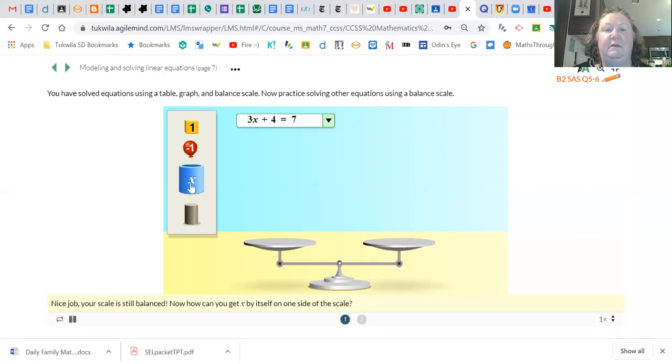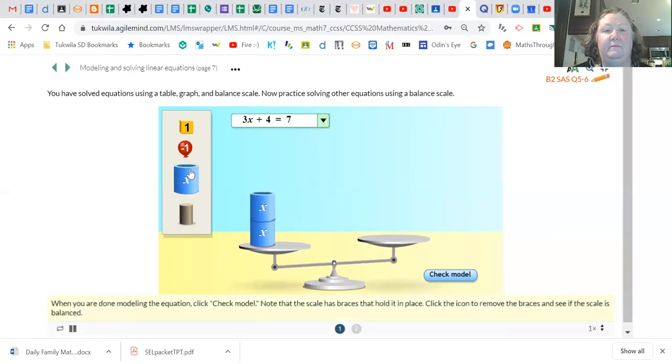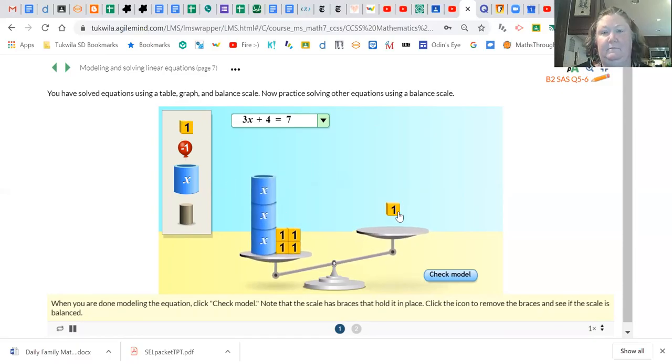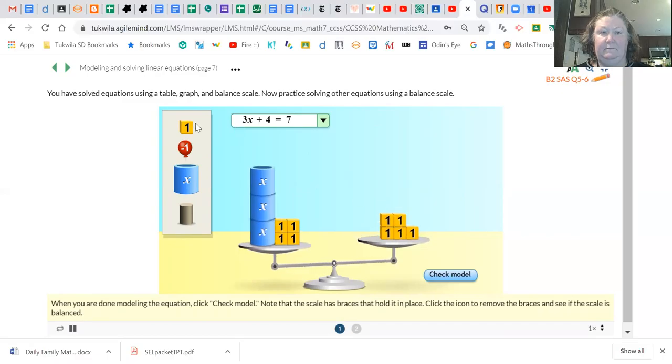The final screen I'm going to assign you when you log into Agile Mind has a scale, and you guys are going to select an equation and use this to make the equation. Three x's plus four equals seven.